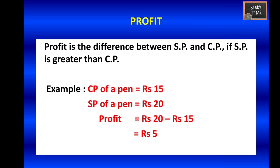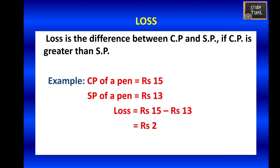Here is an example: I am buying a pen for rupees 15 — that is the cost price. I am going to sell the same pen for rupees 20. When you subtract the cost price from the selling price, you get rupees 5 as profit. So the profit is rupees 5 when you buy a pen for 15 rupees and sell it for rupees 20.